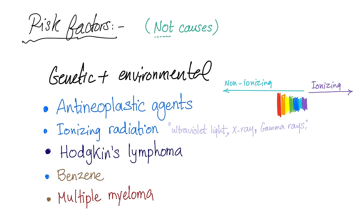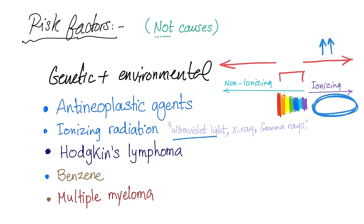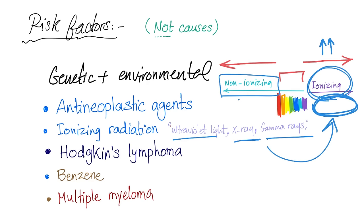What's the difference between ionizing and non-ionizing radiation? Here is the electromagnetic spectrum with visible light in the middle. Frequency and energy increase toward the ionizing end. Ionizing radiation includes ultraviolet, X-rays, and gamma rays. When talking about cancer, ionizing radiation is more dangerous than non-ionizing radiation — I'm not saying non-ionizing is completely safe, just that ionizing is more dangerous. Other risk factors include Hodgkin's lymphoma, benzene, and multiple myeloma.